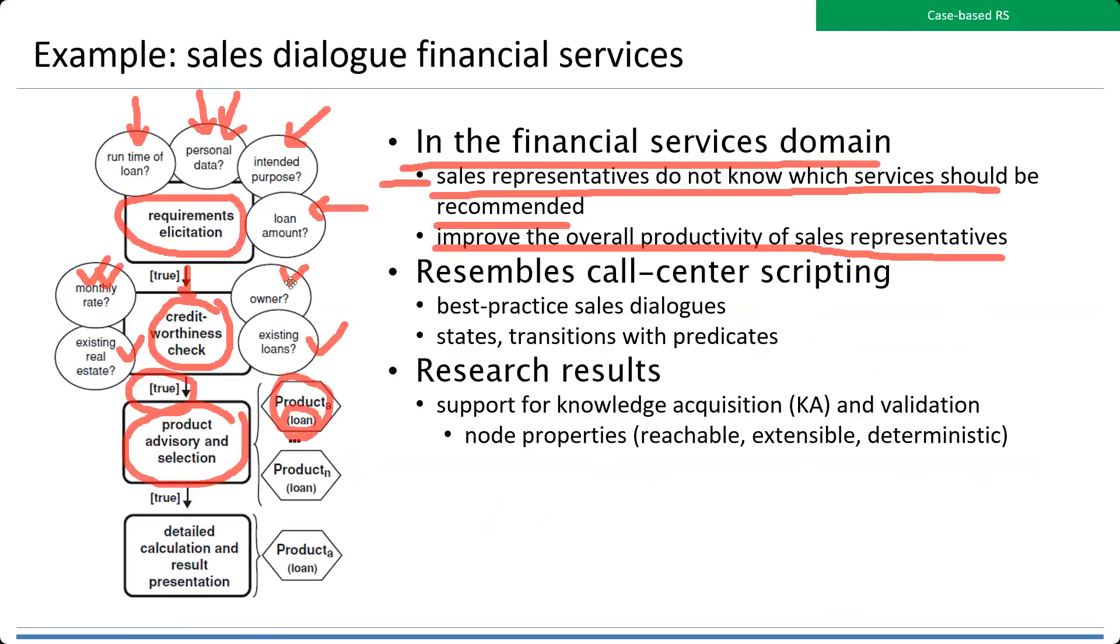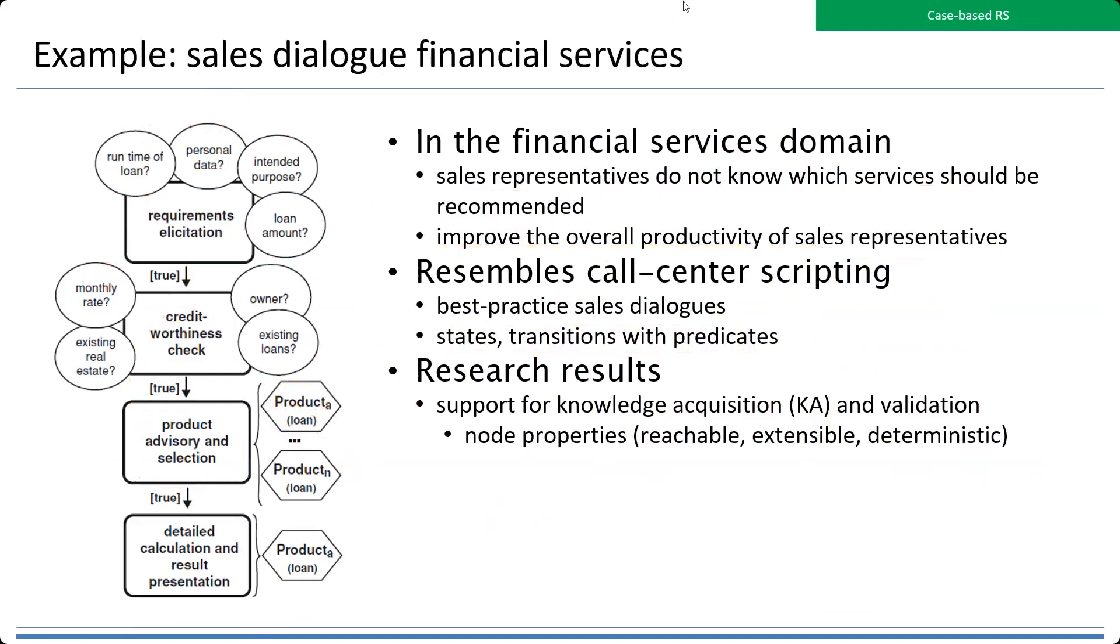You need to mention the state and the transition. That's why in this kind of situation we have states. The questions should exactly represent the state: monthly income high or low? Existing loans yes or no? And then ask how much. This kind of recommendation resembles call-center scripting with best-practice sales dialogues, states, and transitions with predicates. Research results show support for knowledge acquisition and validation.